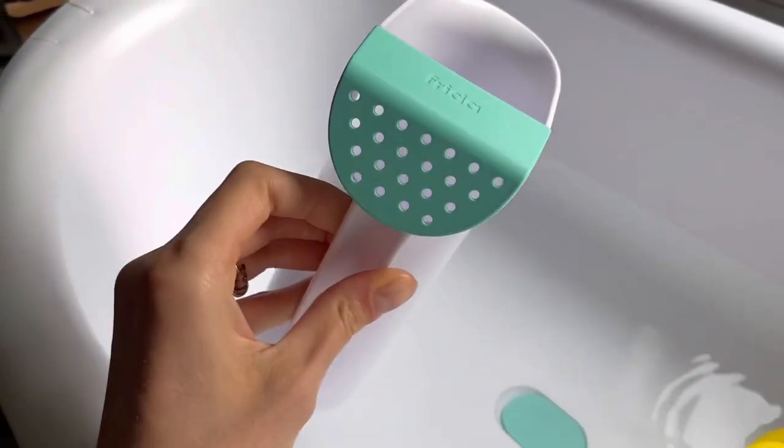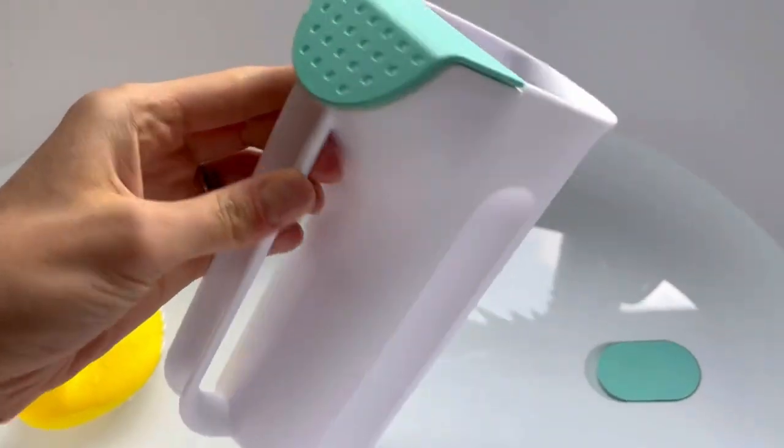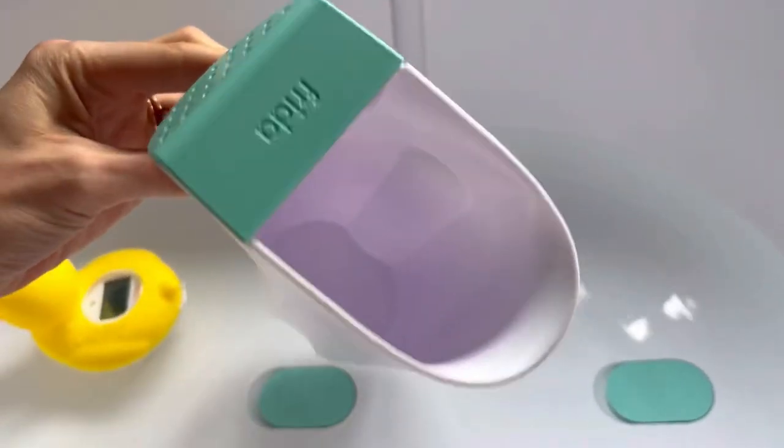This is the Frida Baby Control the Flow Rinse Cup and we've been using it for the last couple weeks with my five-month-old daughter and it works perfectly. I love that there's two sides.